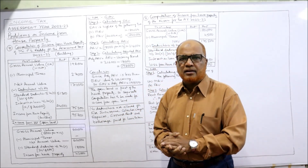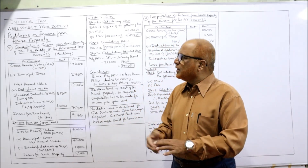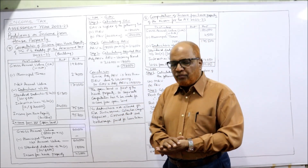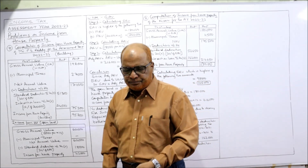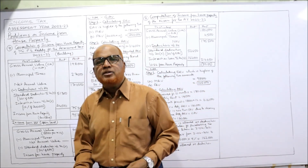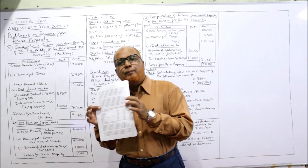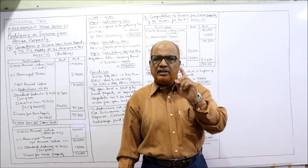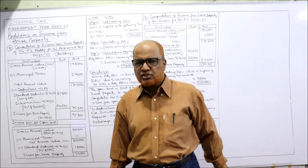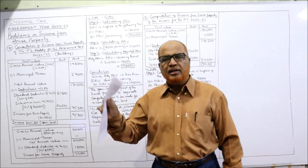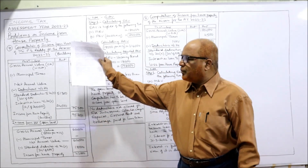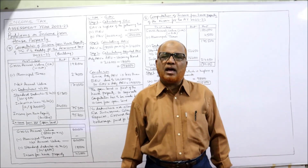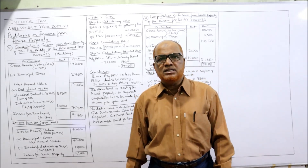If standard rent is not given in the problem, it simply means the house is not governed by the Rent Control Act. Now before starting the seventh problem, I expect my viewers to have a printout of the problems given in the link under my description. Always keep it handy, take a screenshot of the points written on the board, then I'll explain every point in detail.